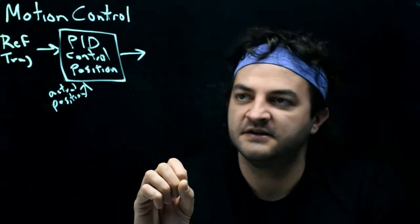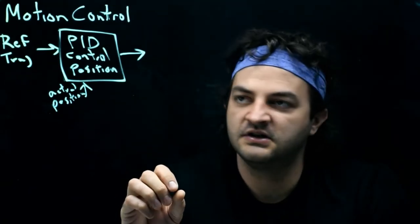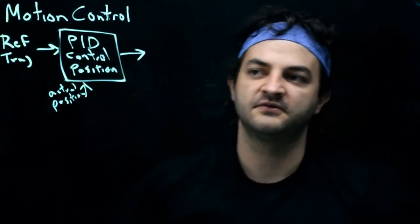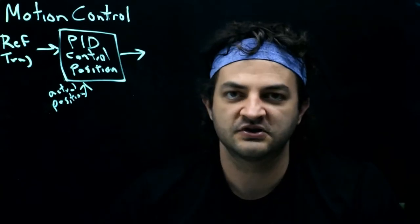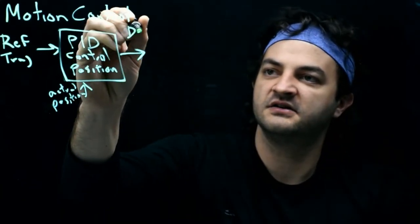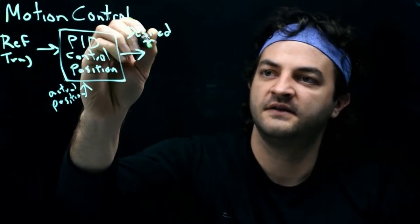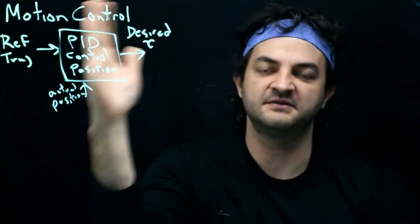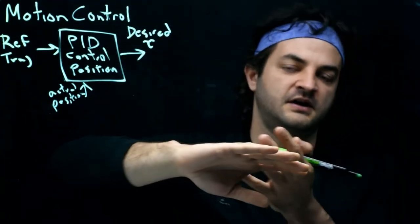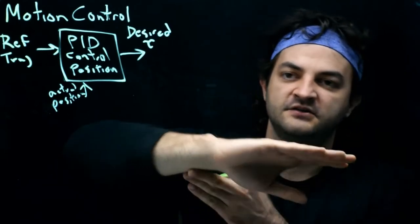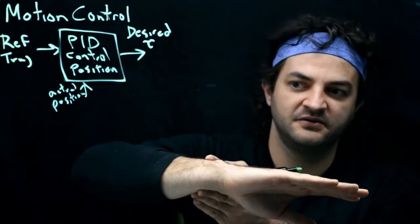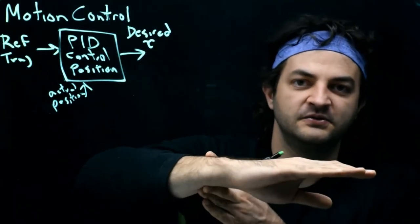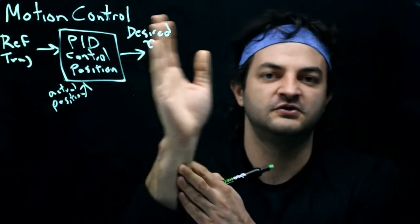If the voltage changed or the load changed, we can adapt better if instead of directly controlling the PWM from the output of this PID motion controller, we create a desired torque that goes through the motor. So maybe I'm at this position but I'm supposed to be at this position. I know the inertia of the bar I'm trying to rotate, how fast I should get there, and the acceleration I need to apply to move it to the final position.